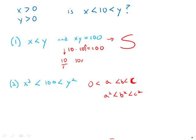Well, here we know that x and y are positive. So we can take the square root of x squared less than 100 less than y squared, and it will have the same order — as long as you take the positive square root, everything will have the same order. And this also is equivalent to a yes answer to the prompt question.